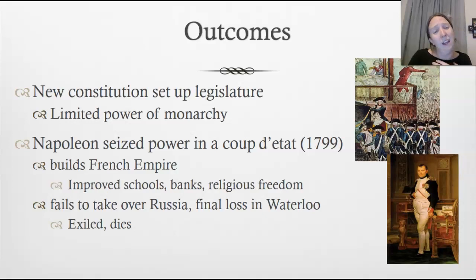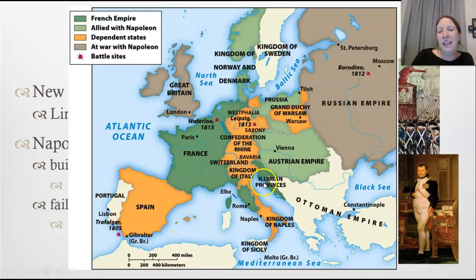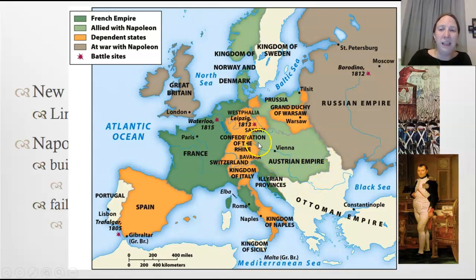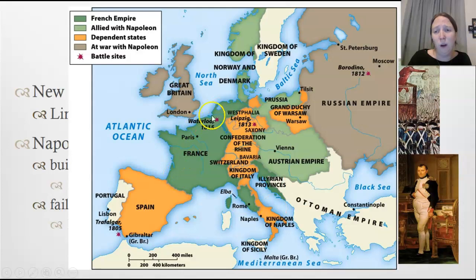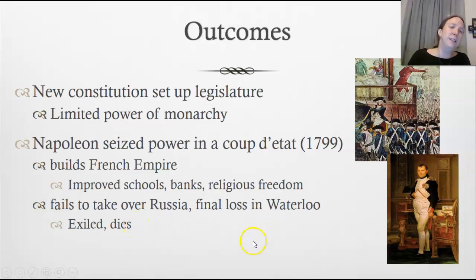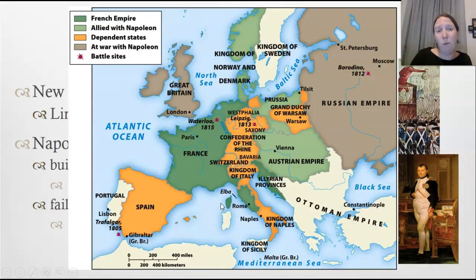Eventually Napoleon became consumed with building the French empire and was not the democratic ruler revolutionaries had wanted. He took over individual countries and forced Spain, Italy, parts of Germany, and Poland into dependence on him. He never gained control of Great Britain or Russia. When he failed to take over Russia and experienced his final loss at Waterloo, Belgium, he went into exile and died there around 1812, having maintained power for about 12 years.